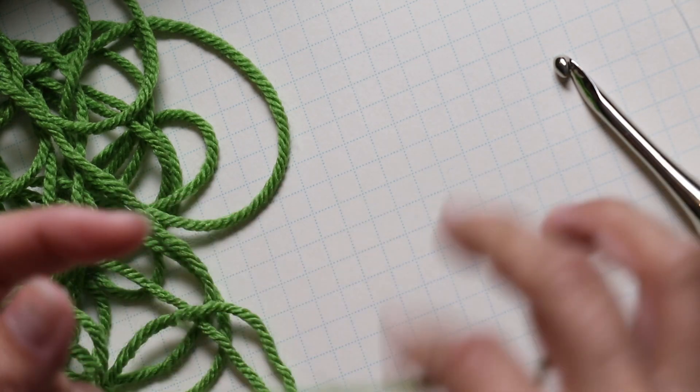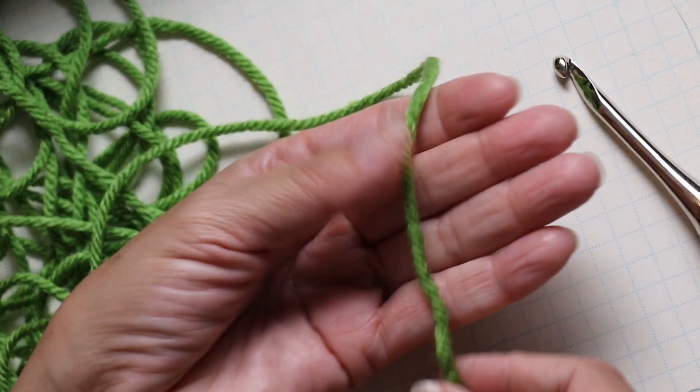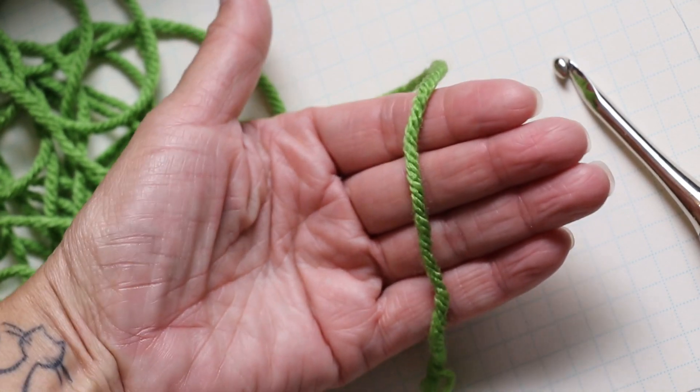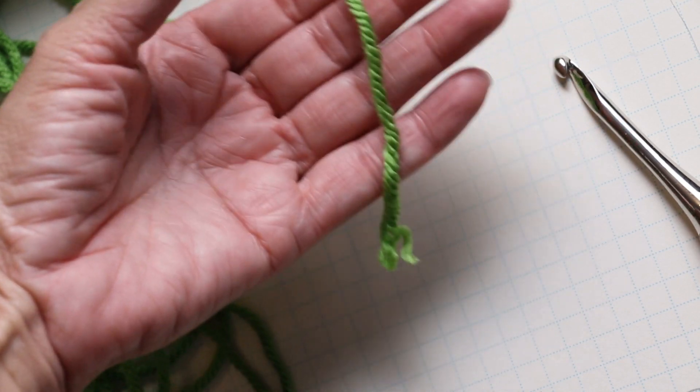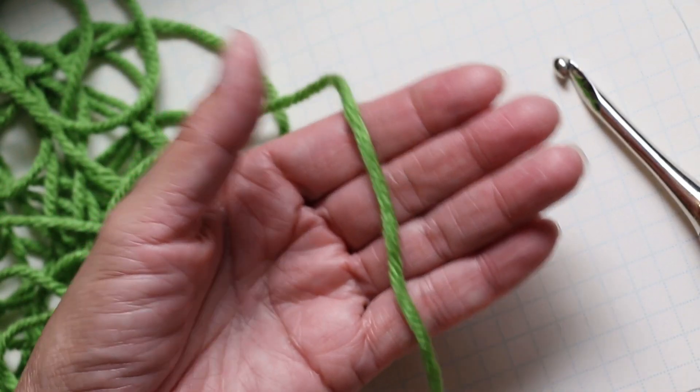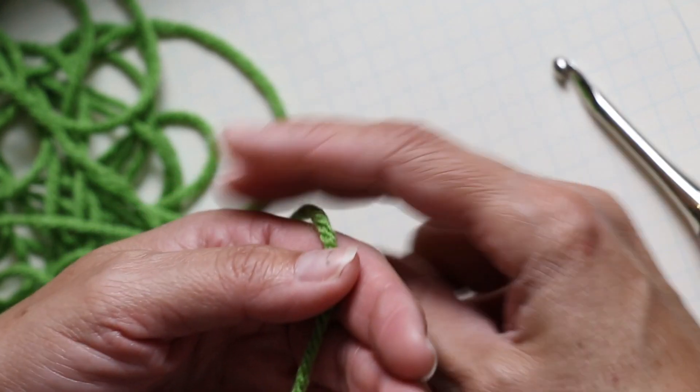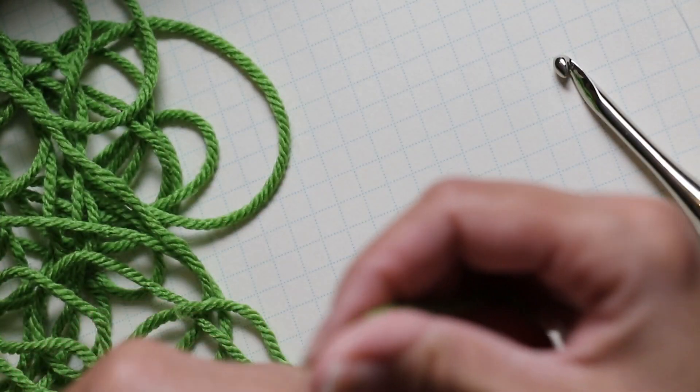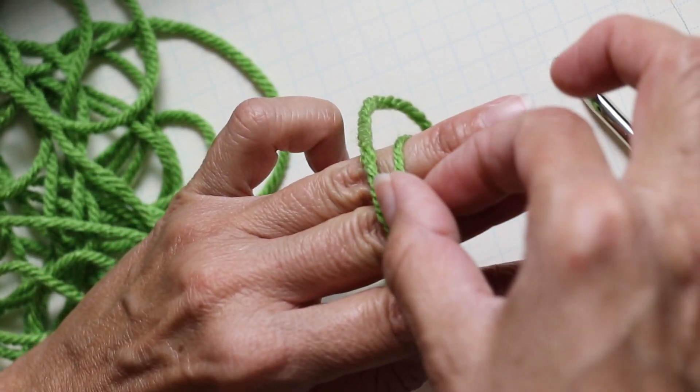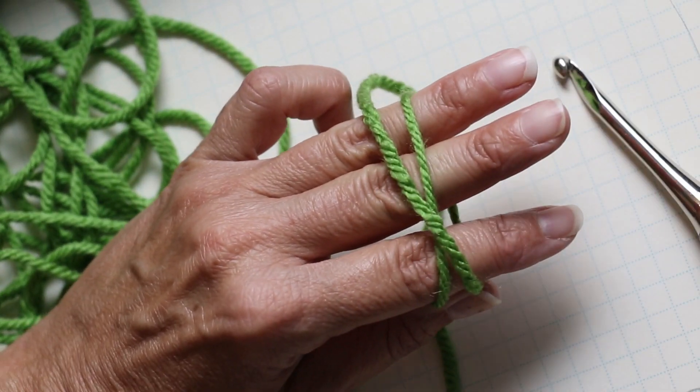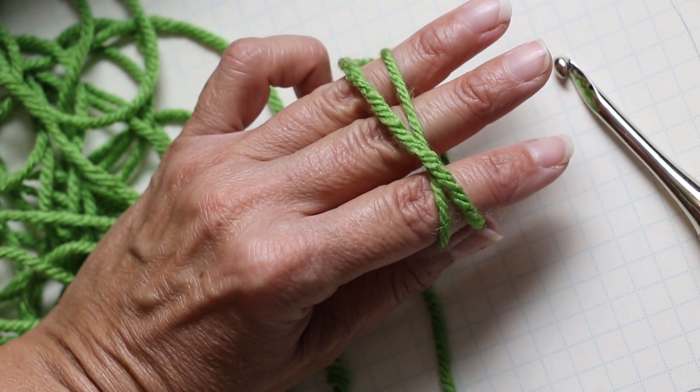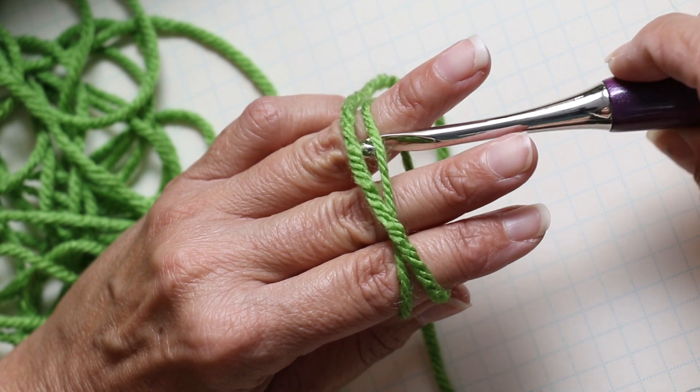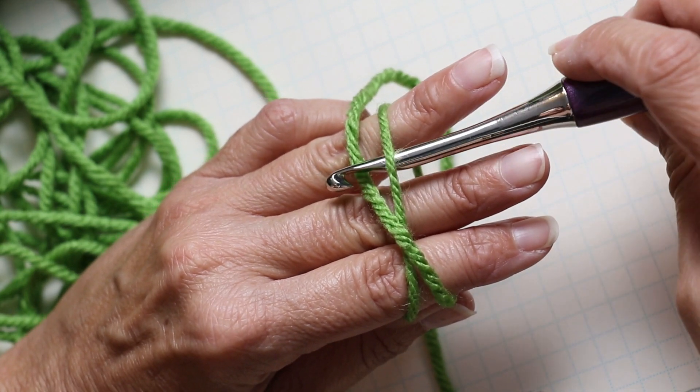Take your yarn and put it over your hand. Leave a significant tail, then wrap the yarn over your fingers and under your fingers so you get a loop crisscrossing on the back. Take your hook, go under and then over, and twist it up like this.